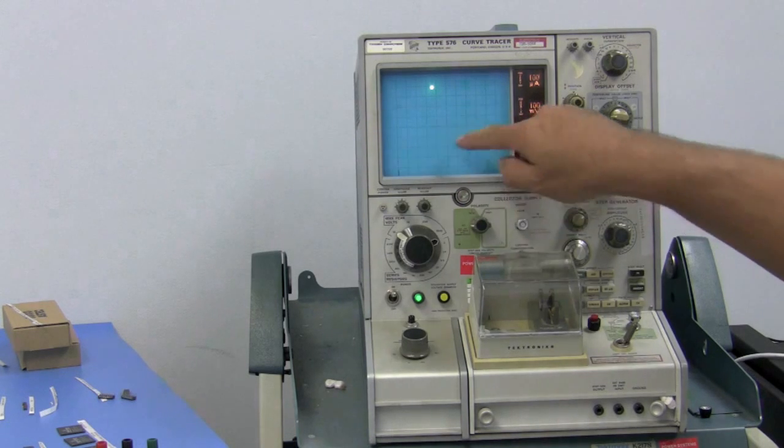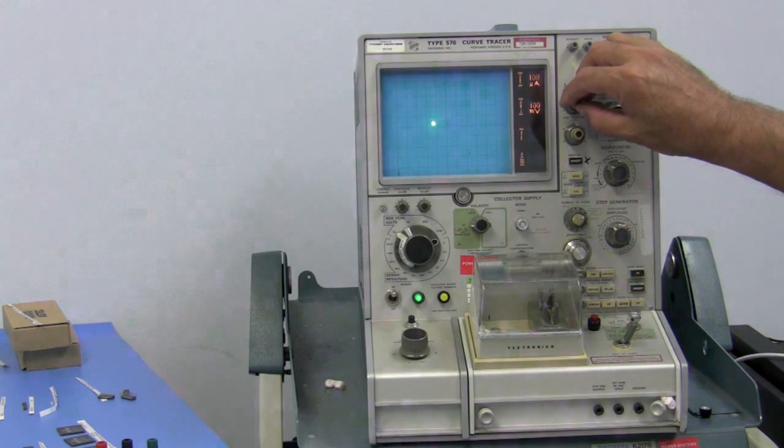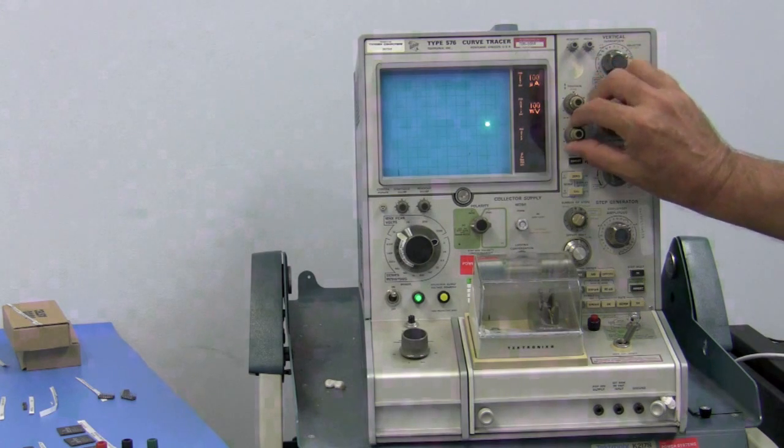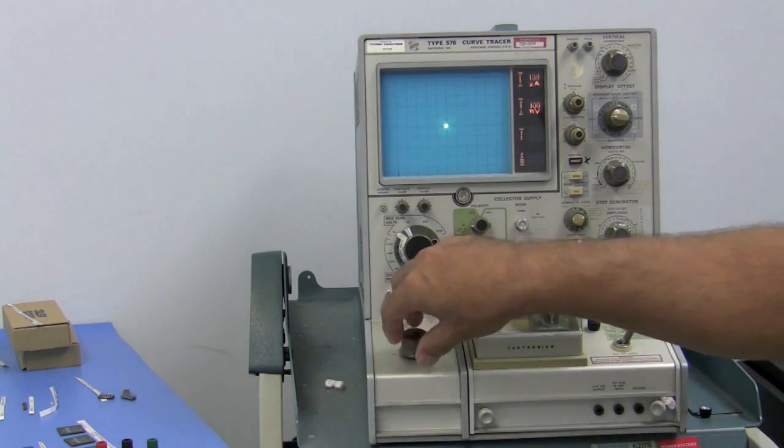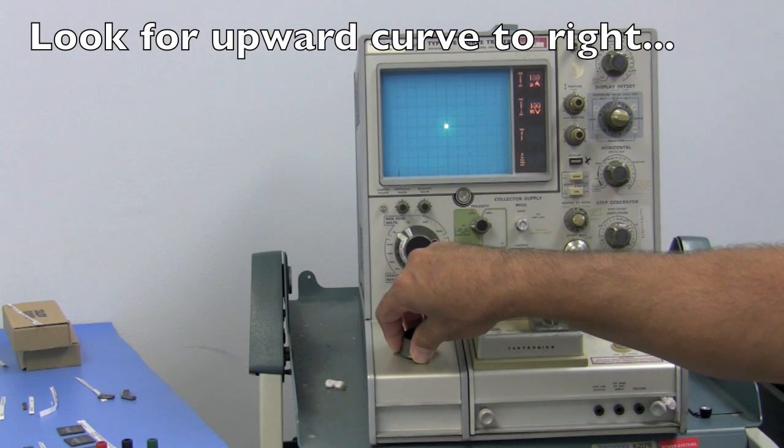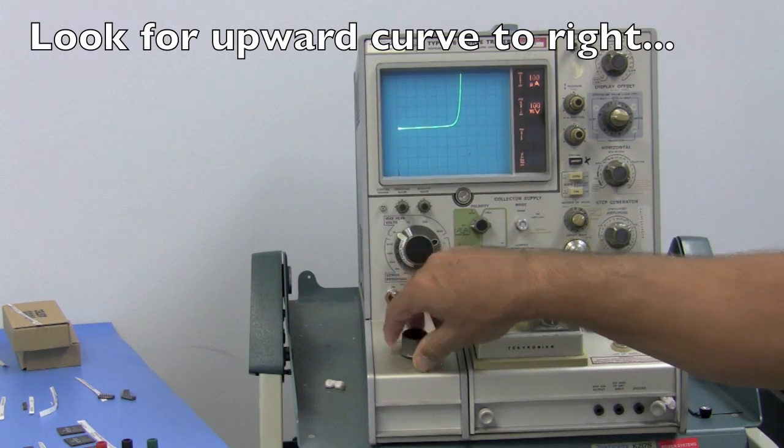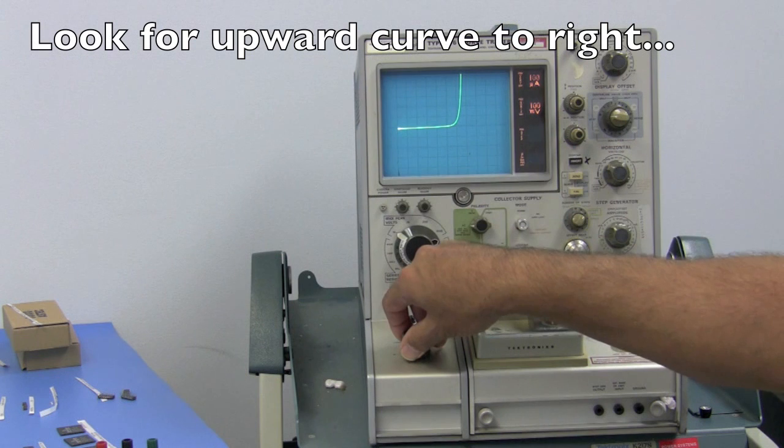AC mode and center your dot. Now we should be able to see the diode in the positive direction and, of course, no breakdown yet in the reverse.